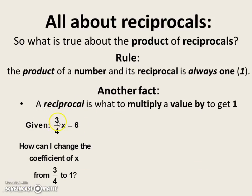Well, given this equation, three-fourths times x equals six, how can I change the coefficient of x from three-fourths to one? And that'll help me solve this equation.